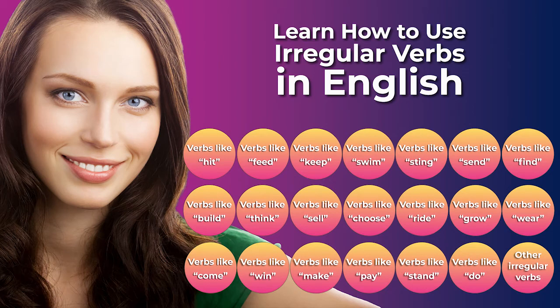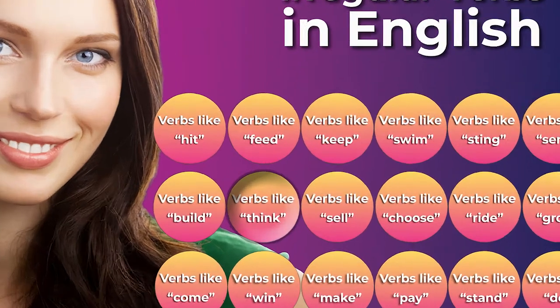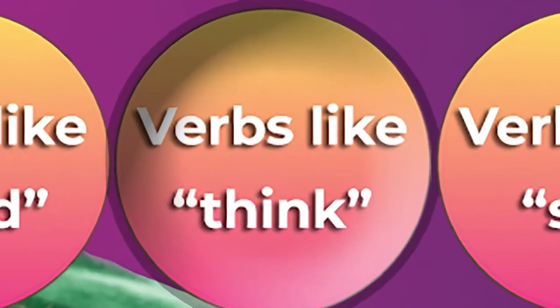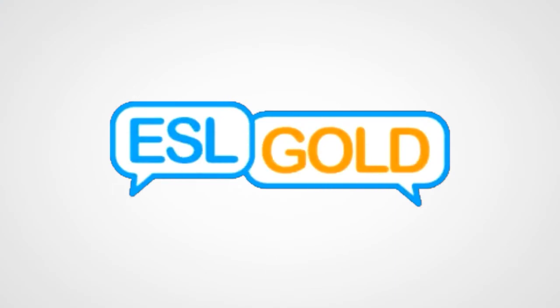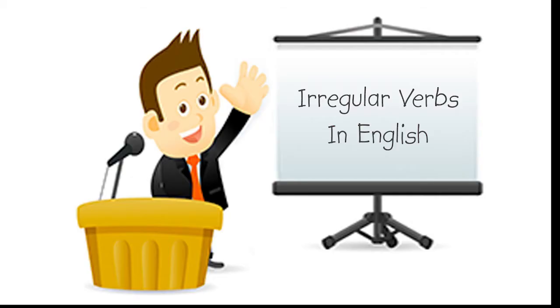These 21 short videos will help you quickly see and understand the relationships and patterns among various types of irregular verbs in English so that you can use them correctly. This video will help you see relationships among various types of irregular verbs in English. The key to understanding irregular verbs is to look for and notice the patterns.